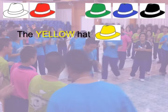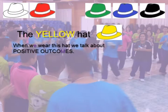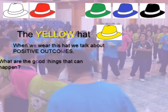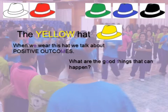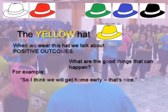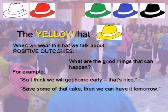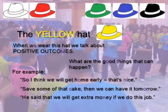The yellow hat is used for talking about positive outcomes — good things that can happen out of a situation. For example: I think we'll get home early today, save some of that cake and we can have it tomorrow as well, or he said we will get extra money if we do this job. These are all yellow hat style statements.